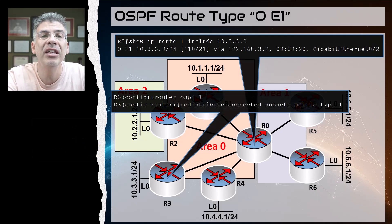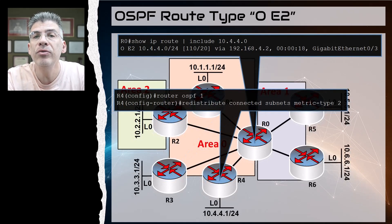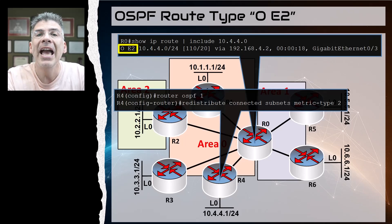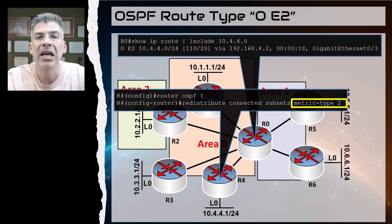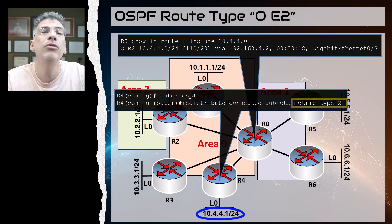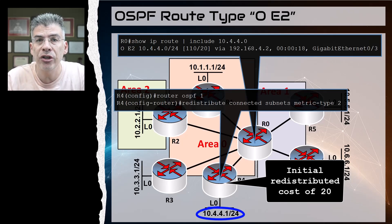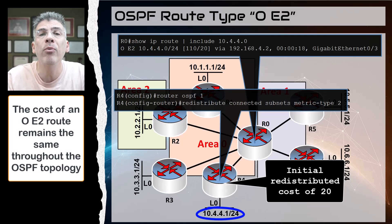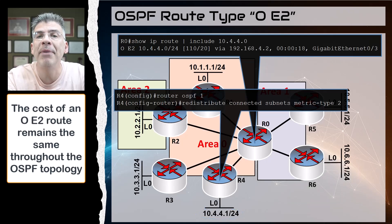Let's see how the OE2 routes differ in their behavior. An OE2 type route is exactly the same as an E1 type route except for this command here — the metric type 2 issued in the redistribute command. Like E1, an E2 route will be assigned a specific metric when it is redistributed. Once redistributed into OSPF, however, no matter how far within the OSPF domain it may travel, the cost remains the same.